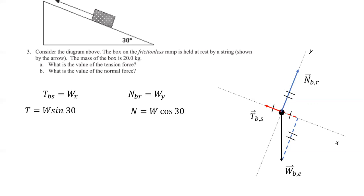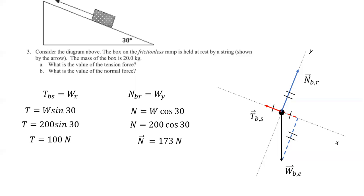The angle 30 degrees is opposite to the red dashed line, so the x component vector is given by sine. Tension equals the weight times sine of 30. The angle 30 degrees is adjacent to the blue dashed line, so the y component is weight times cosine of 30, which equals the normal. The mass of the box is 20 kilograms, so weight is 200 newtons. Plugging that in, we get 100 newtons for the tension and 173 newtons for the normal.